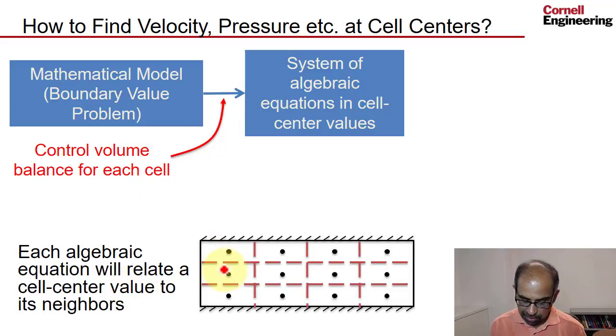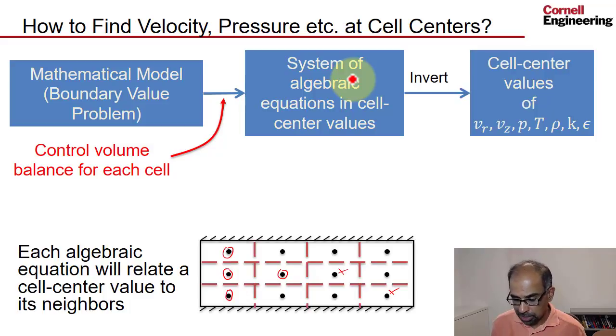So the idea is that each algebraic equation will relate a cell center value to its neighbors. So if I had the pressure over here and write the equation for pressure, it would only involve the neighboring values. This is important because usually in CFD you have tens of thousands, or maybe now even millions of cell centers. So you have the relationships only between the neighbors, and that makes the problem tractable. So you have a system of algebraic equations that relate the neighboring values, and then you invert it, and you get the cell center values of our seven variables.